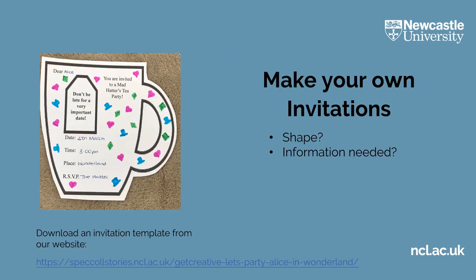To make your own invitations, there are a few things you need to think about. First of all, what do you want them to look like? Do you want your invitations to be a particular shape — for example, a teacup like mine, or a white rabbit, perhaps a top hat? Next, what information will you need to include? It's important to make sure that you say who's invited, the date, time and place of the party, and if they need to reply to anyone to say that they're coming. Why not pause the video now and have a go at making your own invitations? If you like, you can print off and use the templates provided.